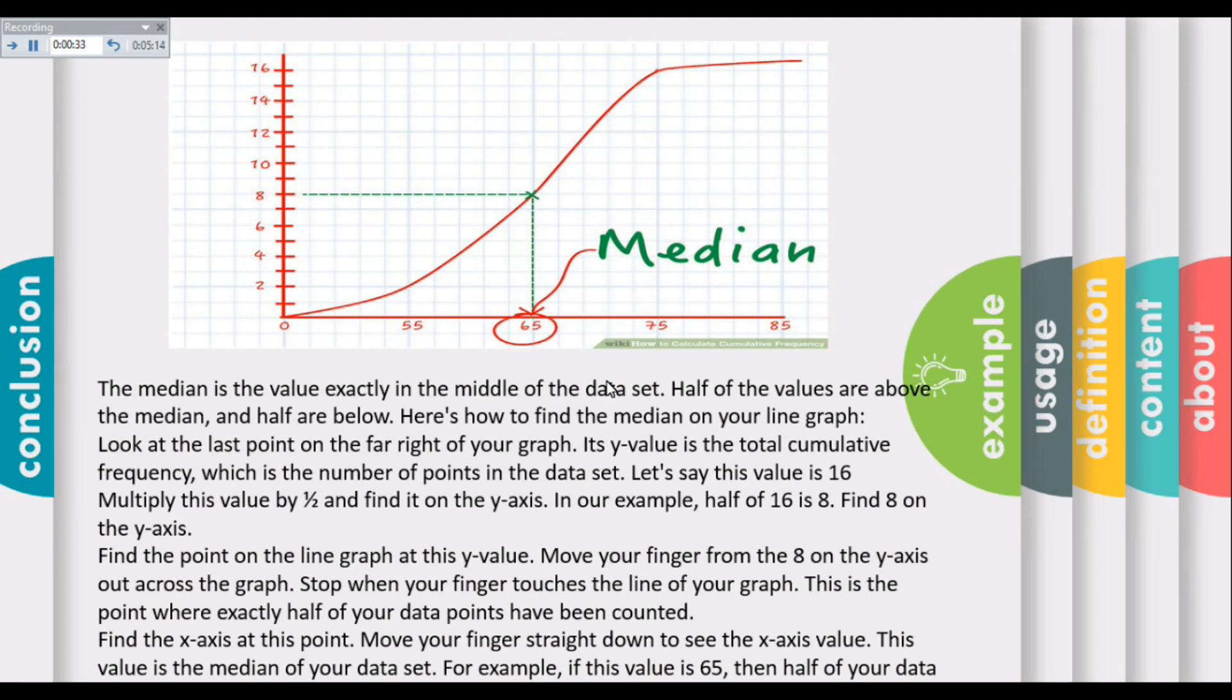Stop when your finger touches the graph. This is the point where exactly half of your data points have been counted. Find the x-axis value at this point by moving your finger straight down to see the x-axis value.